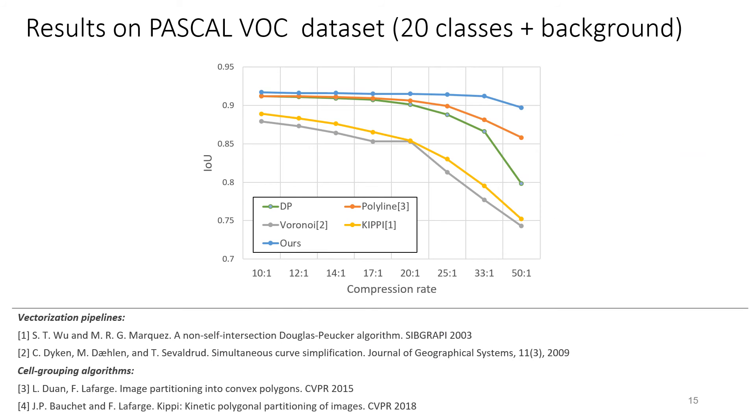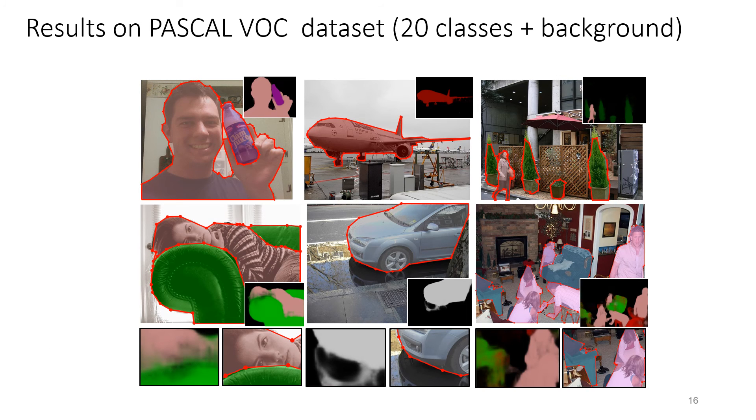We also tested our algorithm on the dataset with multiple object classes. Our algorithm remains robust on the multi-class segmentation task. The input probability maps are shown alongside each example.